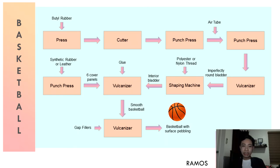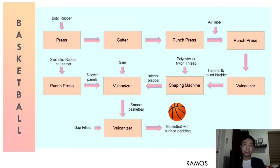In the making of a basketball, we first have to make the core of the ball, known as the interior bladder, which retains air and gives the ball its bounce. First, black natural rubber is melted into a press which feeds it out as a continuous sheet. A cutter cuts this into smaller pieces, which are then sent into a punch press that punches a one-inch diameter hole to hold air for inflating the bladder.